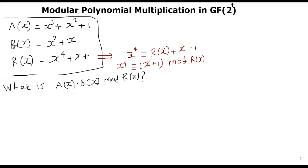For example, if a(x) = x³ + x² + 1 and b(x) = x² + x, if you multiply these two polynomials, you will get x⁵ — a fifth degree polynomial. But in GF(2⁴), there are only polynomials of degree at most 3. So we divide the multiplication by r(x) and take the remainder. It's essentially the same as computing modular arithmetic in a set of numbers — we multiply two numbers and take mod to get the answer within the set.